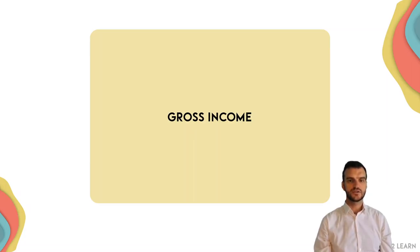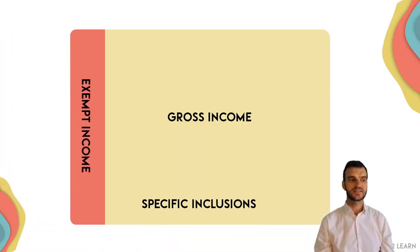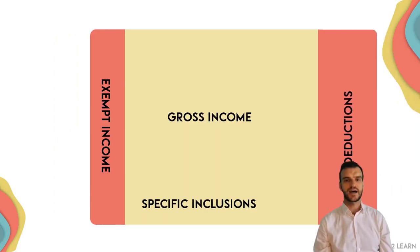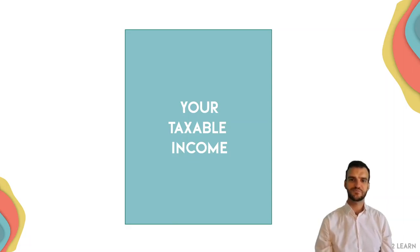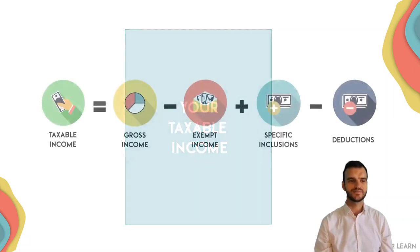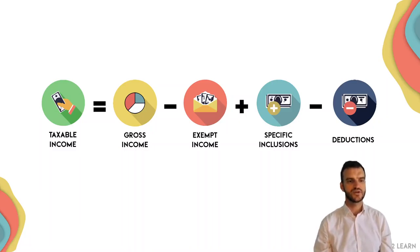To get to our taxable income, we're going to take our gross income, we'll add our specific inclusions, and we will deduct exempt income and deductions, and what is left over is your taxable income. So pretty simple. We are going to look at each of those different elements — what gross income is, exempt income, etc. — in separate videos, and then you'll get a better handle on what goes into your taxable income.